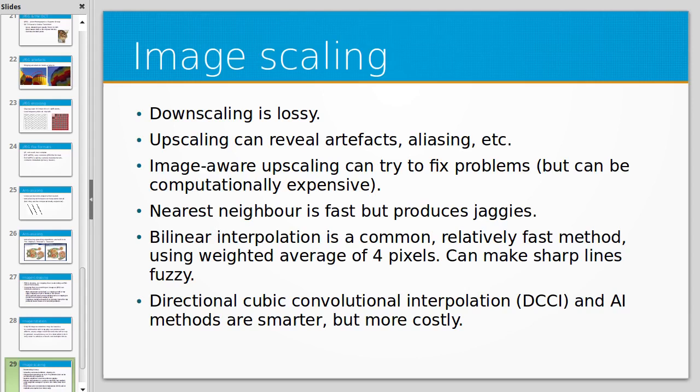There's various algorithms like nearest-neighbor, which is fast but produces jaggies. Bilinear interpolation, which averages 4 pixels. And then there's these other ones like directional-cubic-convolutional interpolation. That's the new hotness. And AI, there's all kinds of AI methods as well. But these are probably too expensive for us to actually use, but they can be very, very clever.